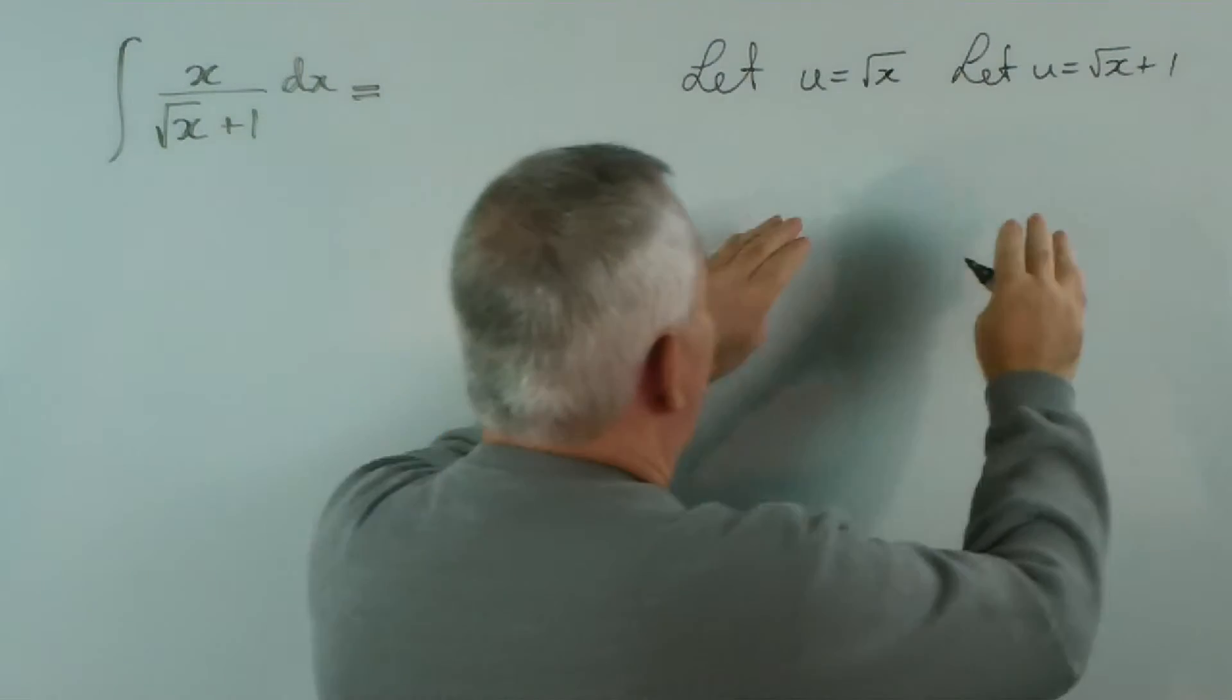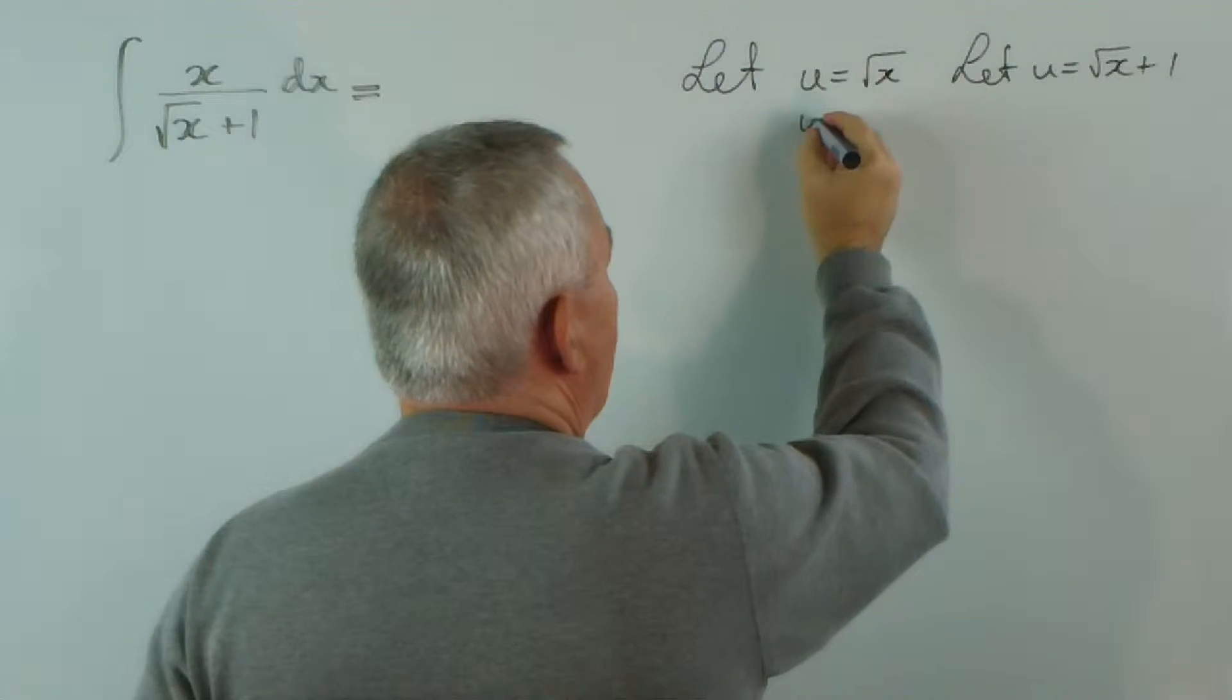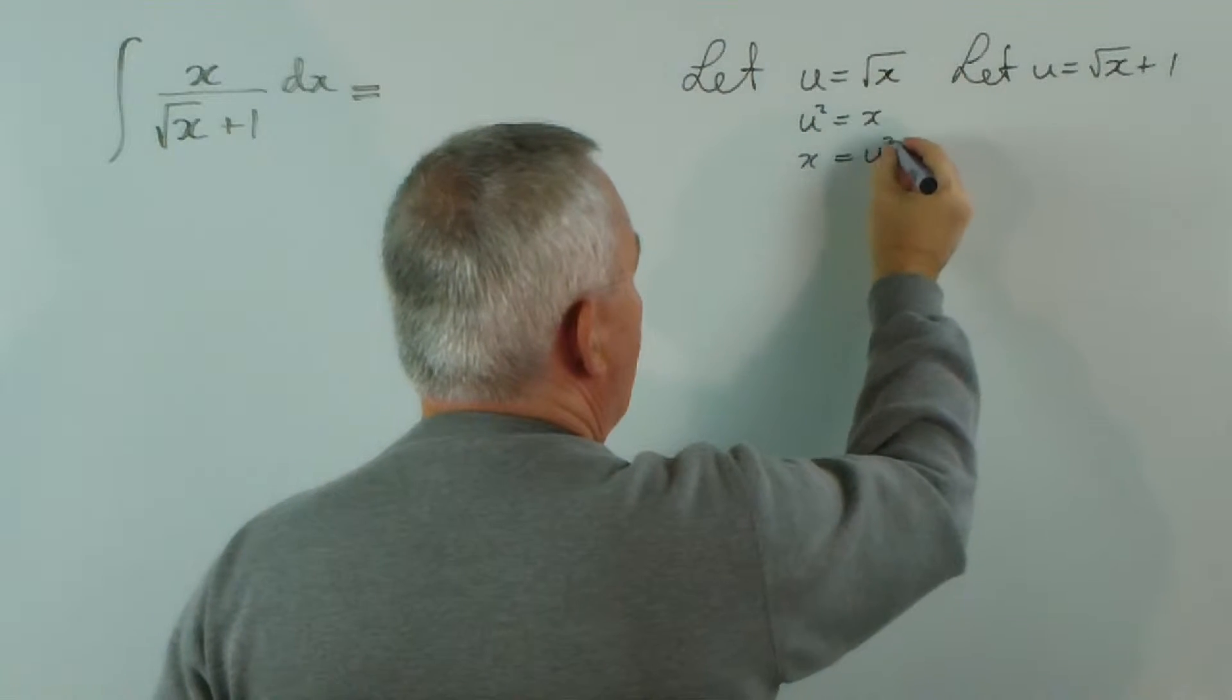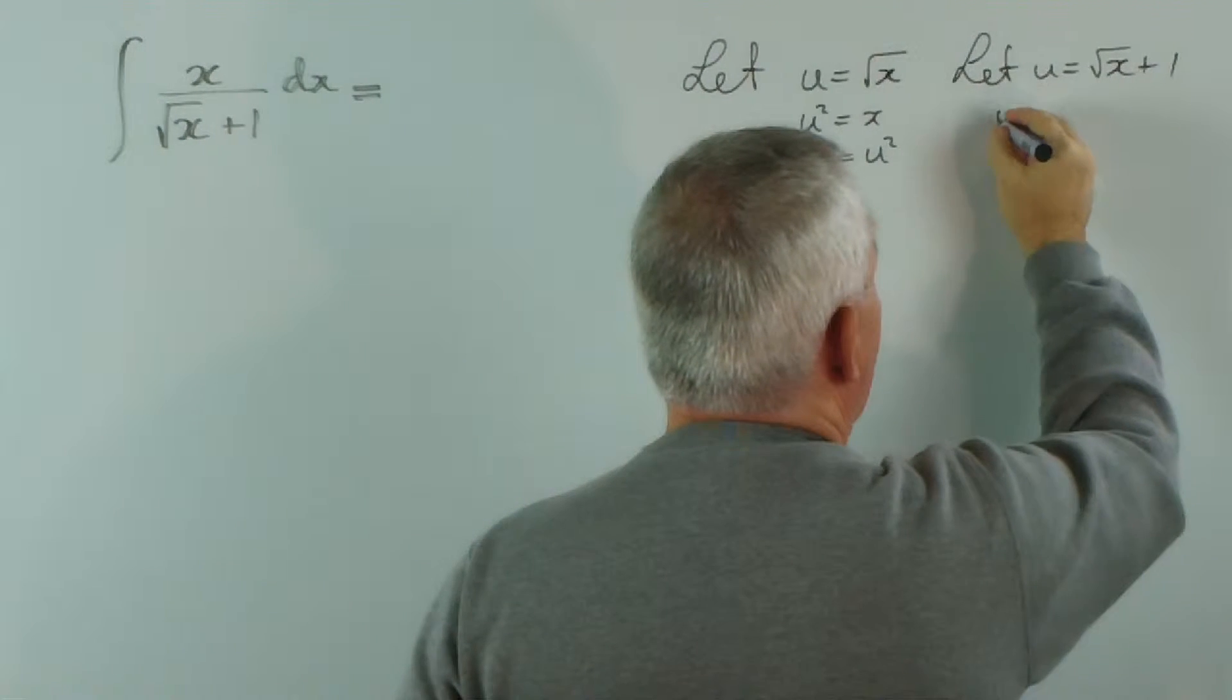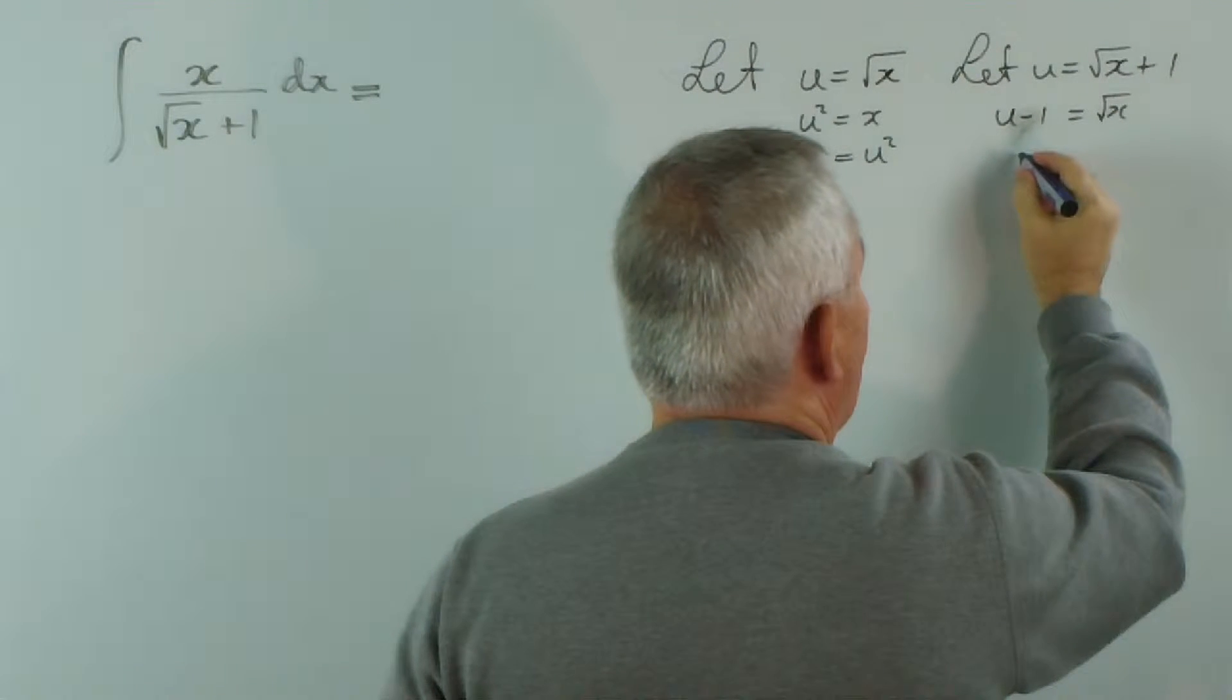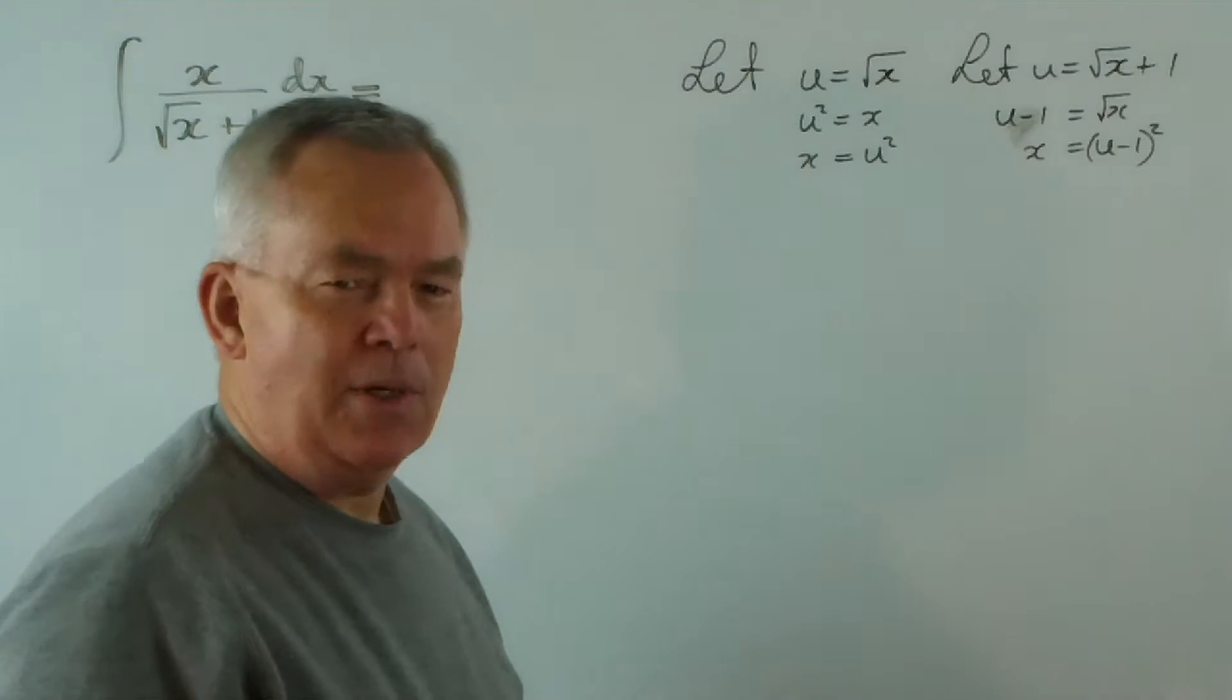Let's have a look at what happens. First of all, if this is true, then when we square both sides, we get u squared is x. So in other words, x is u squared. Here, subtracting 1 from both sides, u minus 1 will be root x. So, squaring both sides, we get x equals u minus 1 squared. So far, so good.